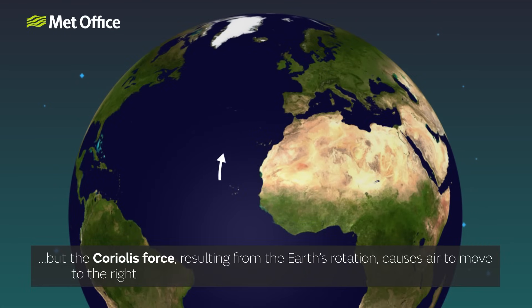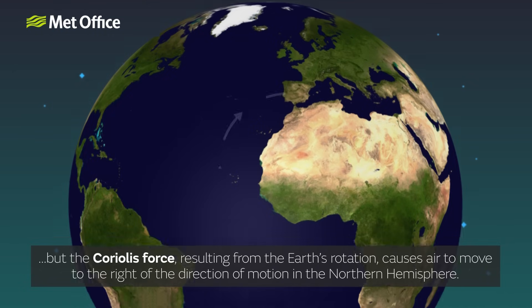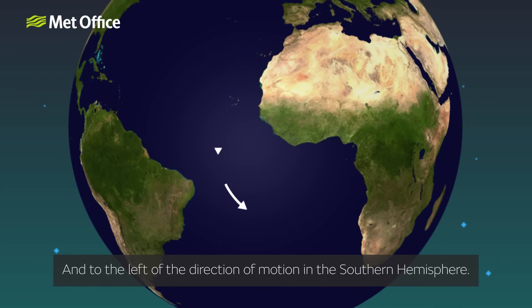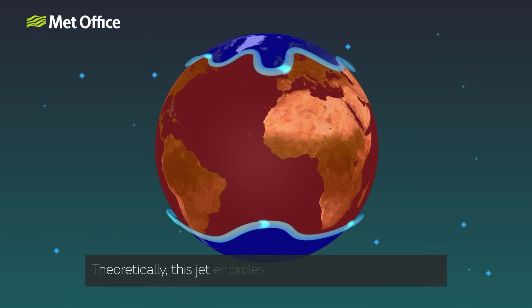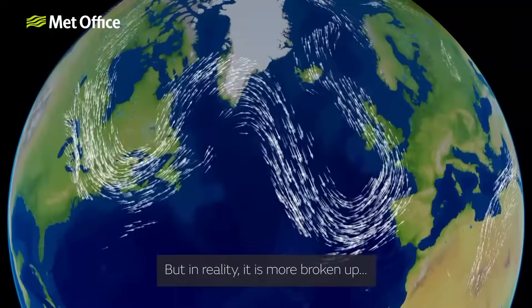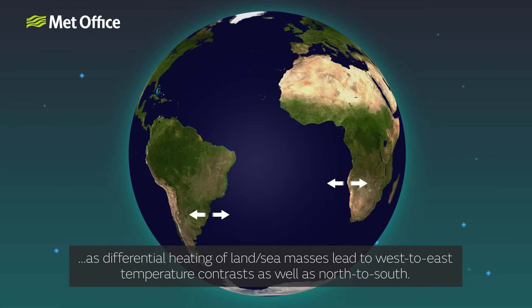But the Coriolis force, resulting from the Earth's rotation, causes the air to move to the right of the direction of motion in the northern hemisphere and to the left of the direction of motion in the southern hemisphere. In both hemispheres the jet stream flows parallel to this temperature gradient, moving from west to east. Theoretically this jet encircles the Earth in a continuous line, but in reality it is more broken up, as differential heating of land and sea masses leads to west-to-east temperature contrasts as well as north to south.